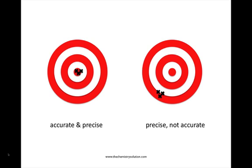If we look at this illustration of a target, the X's on the left target are both accurate and precise. They're accurate because they all hit the bullseye of the target, and they're precise because they're all close together.